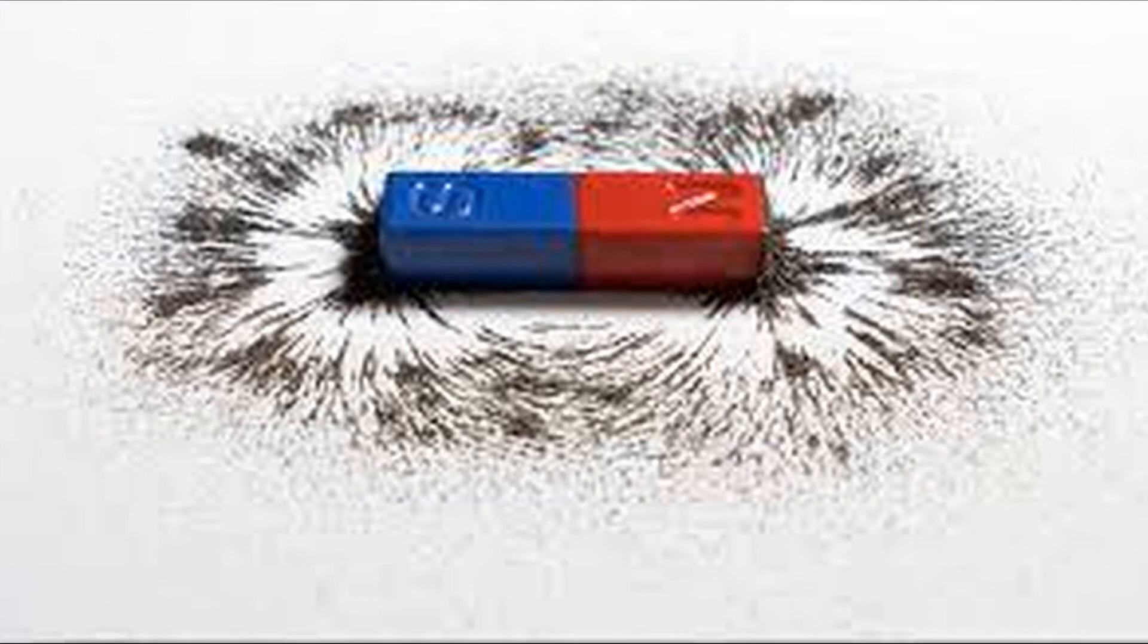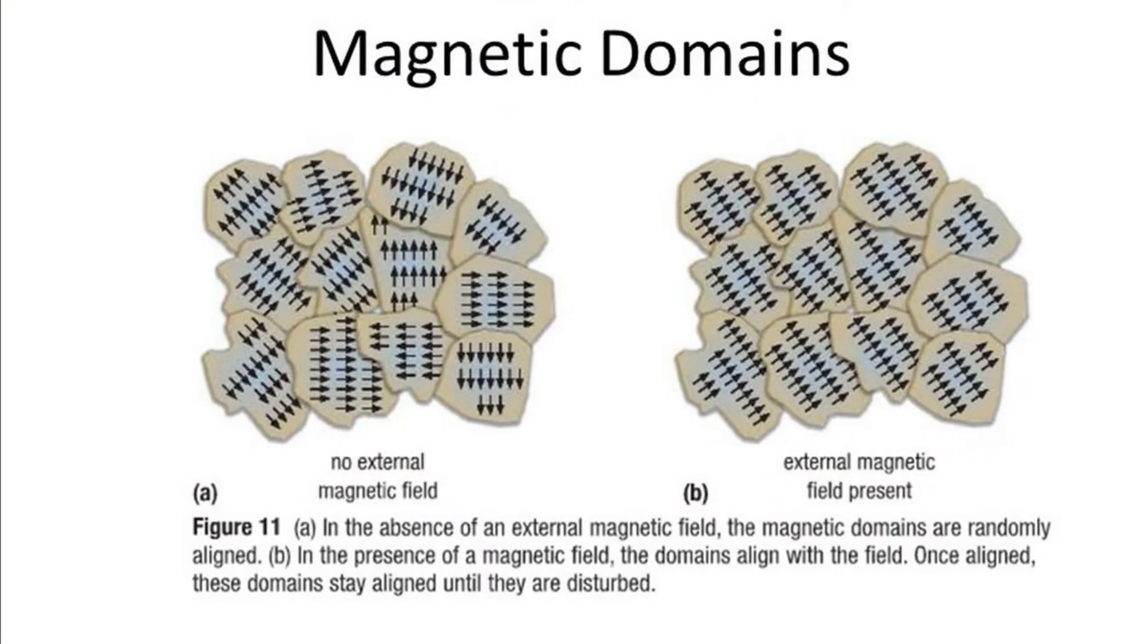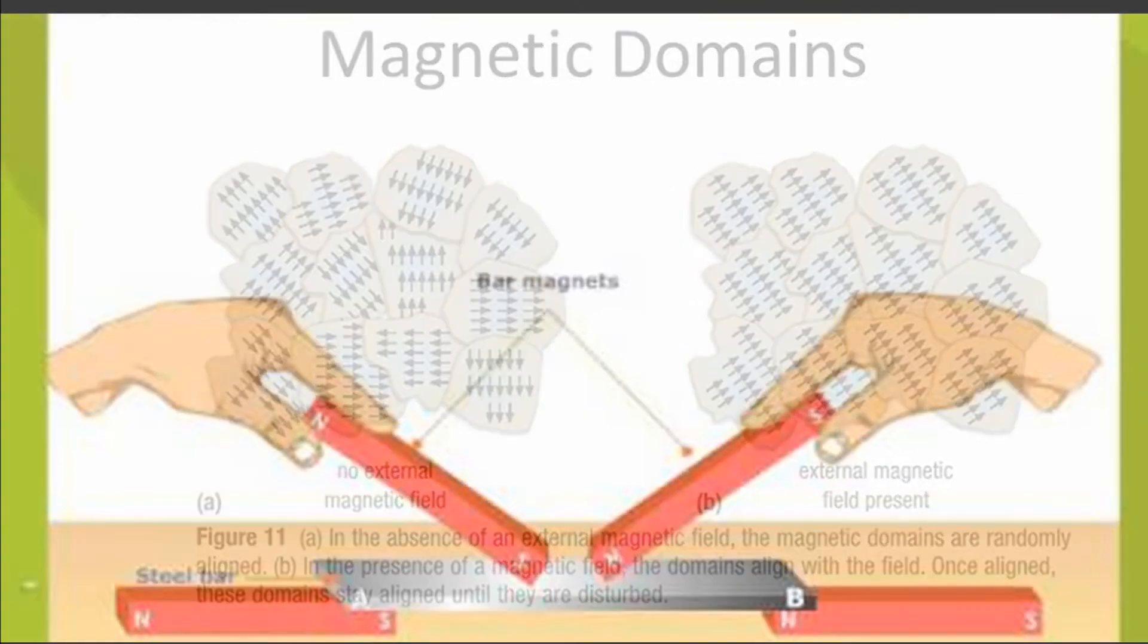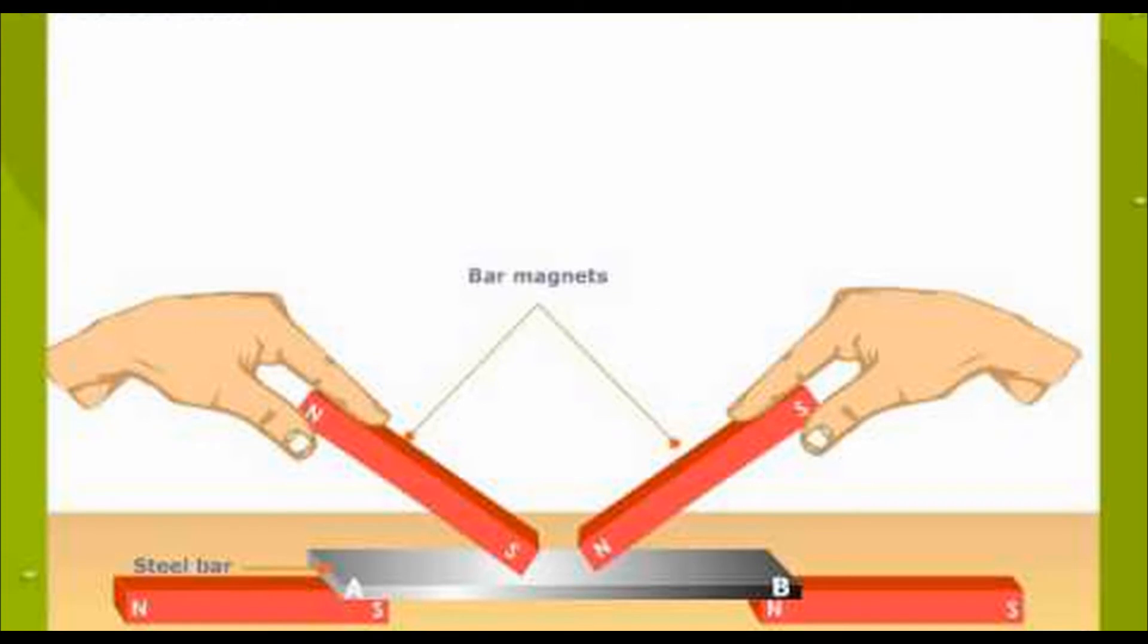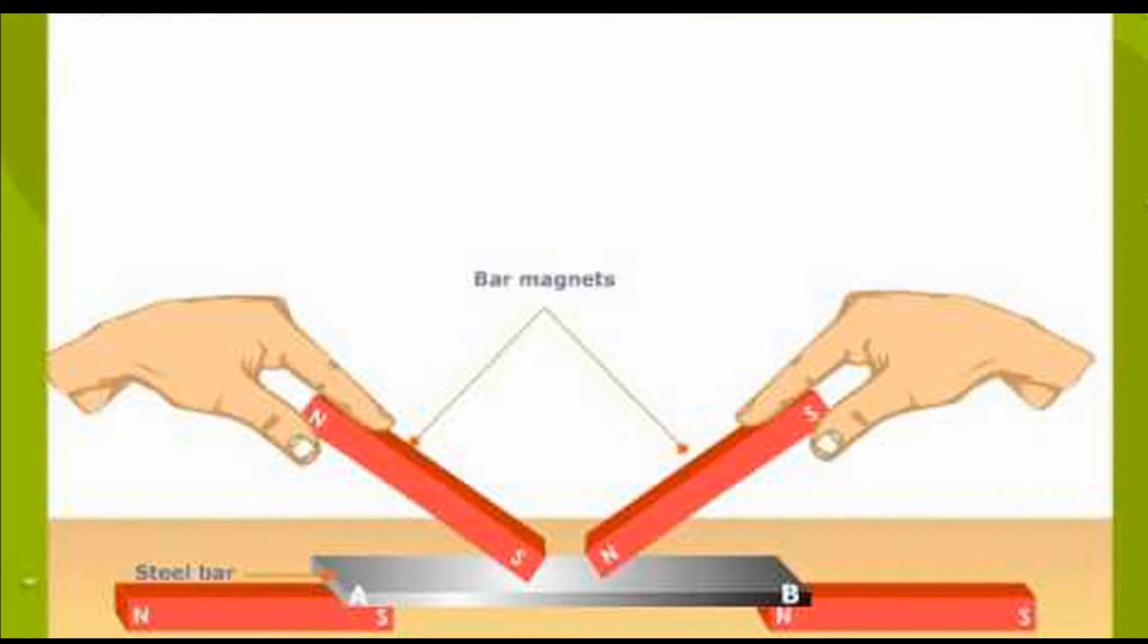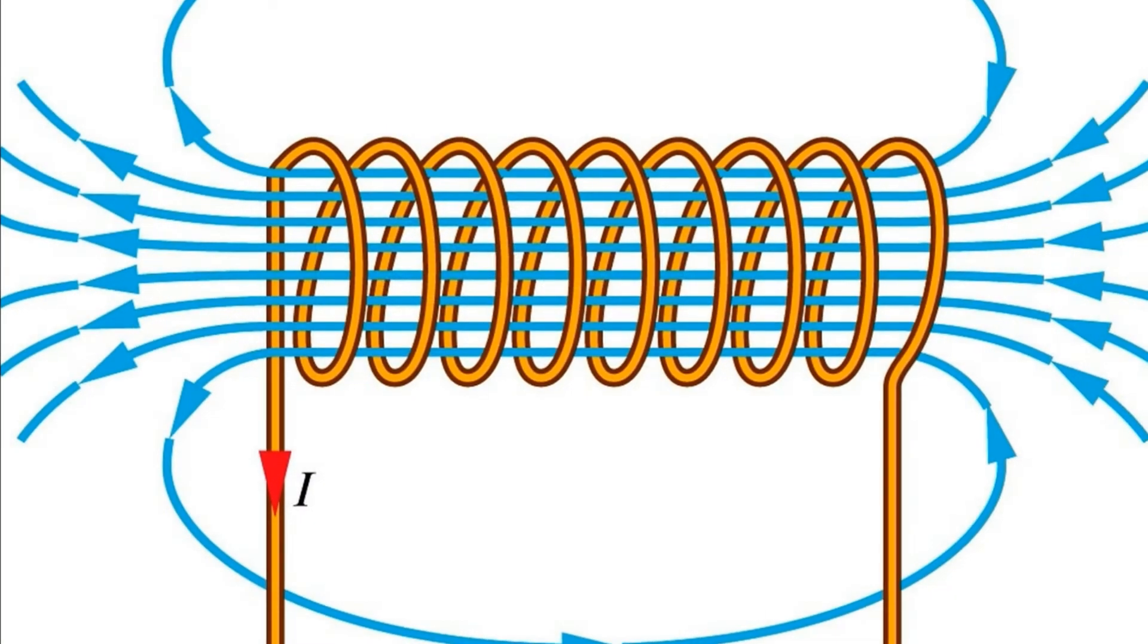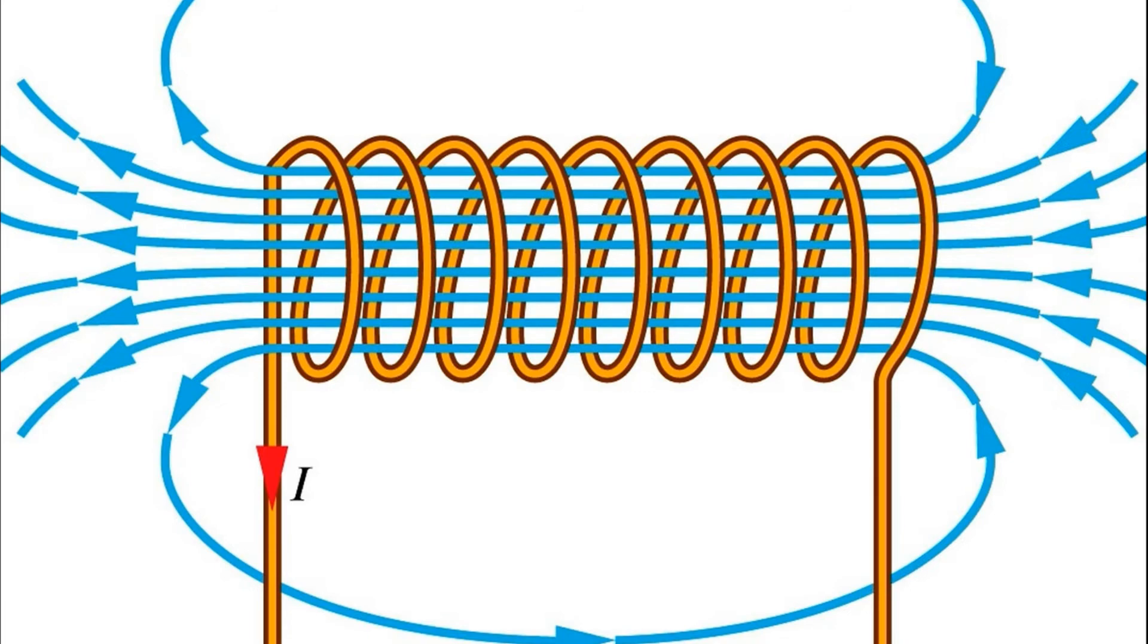A magnet, if stored by itself, gradually loses its magnetism. This happens because the domains may shift position and are no longer aligned. In order to prevent the magnet from getting demagnetized, a piece of iron called a keeper is placed across the poles of the magnet. Domains in the keeper are kept in line by the magnet and the domains in the magnet are kept in line by the keeper. This arrangement prevents the magnet from losing its magnetism.